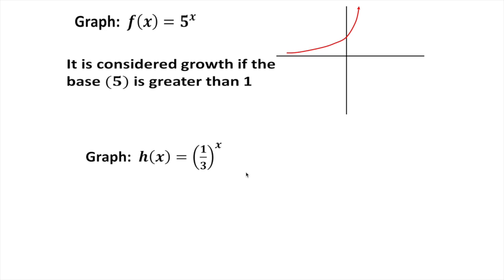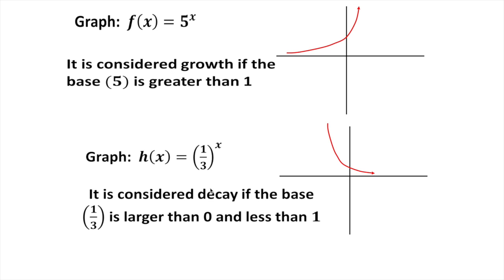Now look at (1/3)^x. This base is not greater than 1 — it's less than 1. If you graph it, you'll notice it goes down instead of up, getting smaller as x increases, approaching the x-axis. The rule is: if the base is less than 1, this is a decay model. Radioactive material and biodegrading items are examples of decay models.